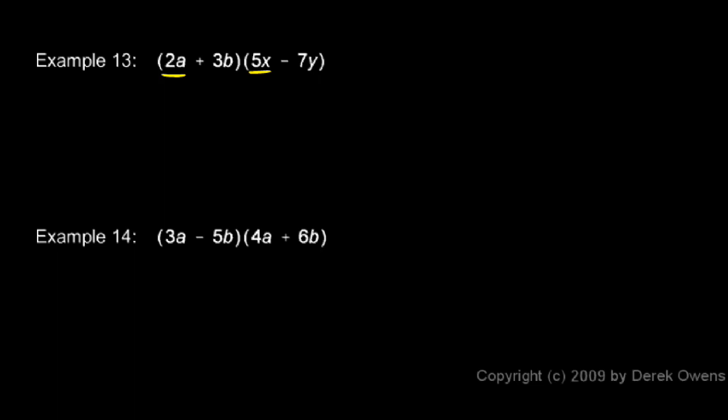The first terms are 2a and 5x. Those multiply together to give us 10ax. The outer terms, 2a and negative 7y, multiply together to give us negative 14ay.